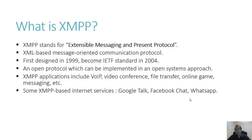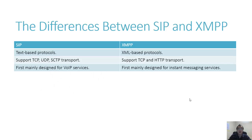XMPP was designed after SIP but provides the same set of features, such as VoIP, video conference, file transfer, online games, and messaging. Many famous applications such as WhatsApp use XMPP servers, and Google Talk and Facebook also announced the use of XMPP for their video features. Although they share the same feature set, there are some key differences between SIP and XMPP.